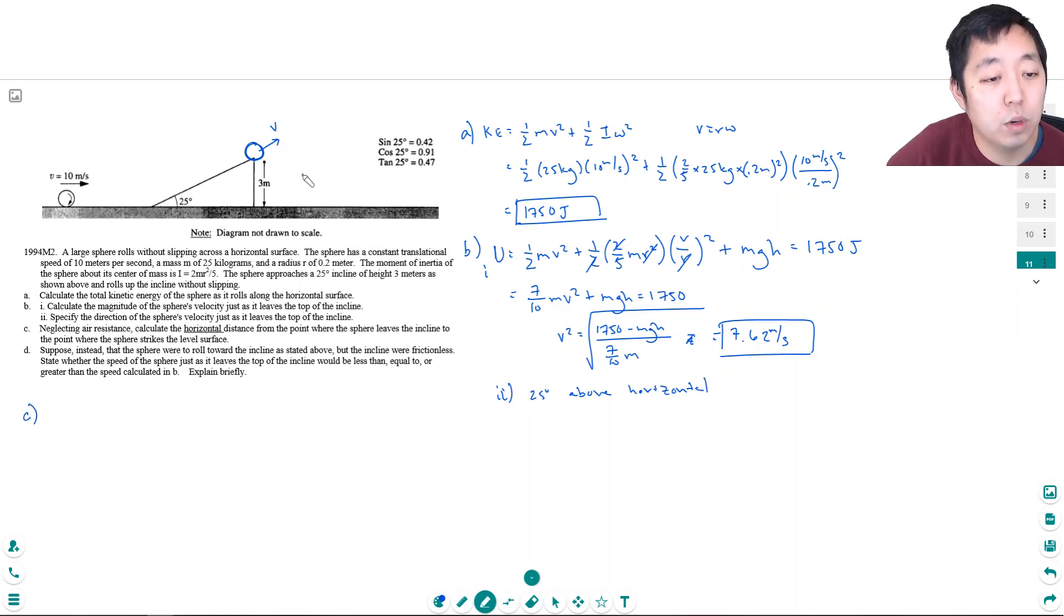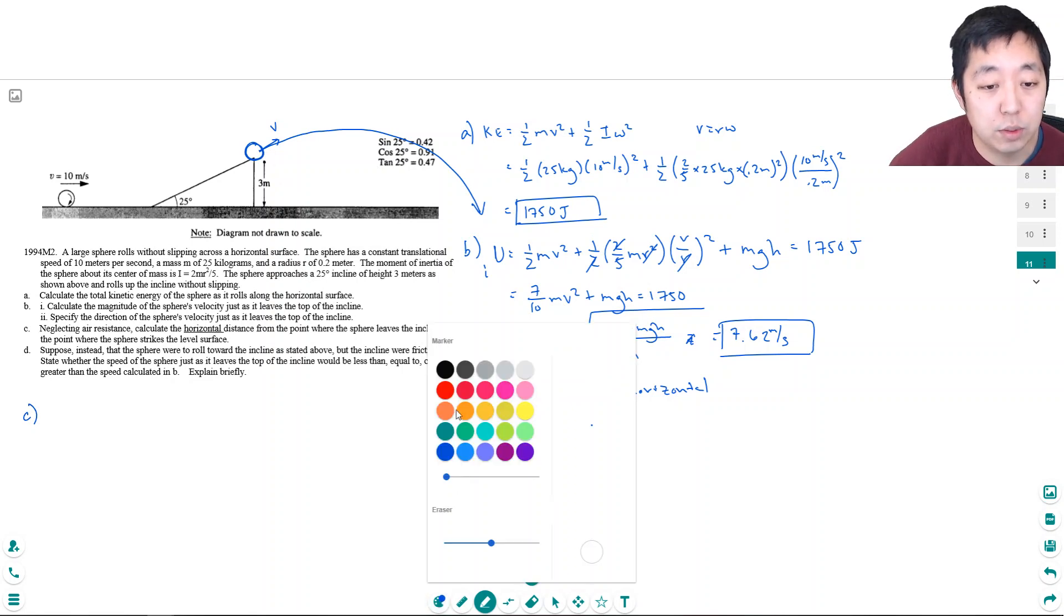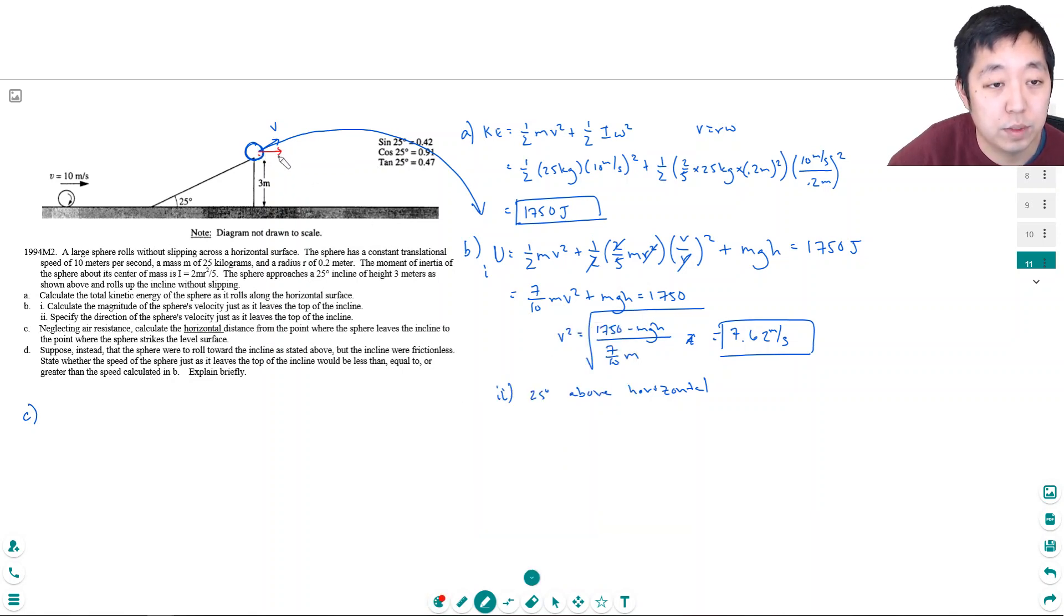Neglecting air resistance, calculate the horizontal distance from the point where the sphere leaves the incline to the point where the sphere strikes the level surface. Okay, I want the horizontal distance. So this is a kinematic at this point. It's going to do an arc trajectory like this. The simplest way is to do kinematics on this. Now, I want to break this velocity into its horizontal and vertical components, right? Because I want to do, so Vx is equal to V cosine of the angle and Vy is equal to V sine of the theta. Or this is theta, which is 25 degrees in this case.